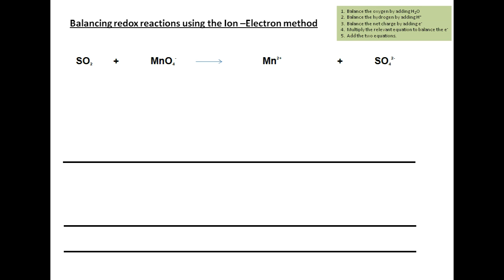Assalamualaikum warahmatullahi wabarakatuh. We are looking at balancing redox reactions using the ion-electron method. Let us look at the following example: SO2 plus MnO4⁻ will give you Mn²⁺ plus SO4²⁻. There are certain rules used for balancing redox reactions using the ion-electron method, highlighted here on the top right in green. Firstly, we balance the oxygen by adding H2O. Secondly, we balance the hydrogen by adding H⁺ ions. Then we balance the electrons by looking at the net charge on each side of the reaction. We then multiply the relevant equations to balance the electrons on both sides, and finally we add the two equations together.